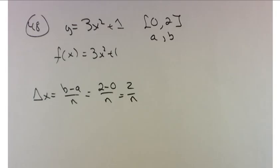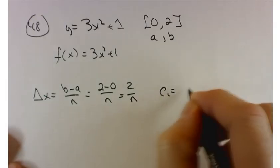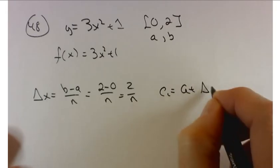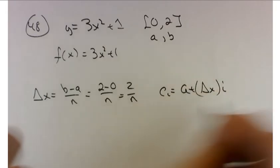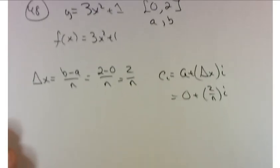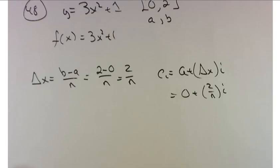The next thing I'm going to calculate is the point at which I'm going to find the height of my rectangles. That's going to be c sub i equals a plus delta x times i. 0 plus 2 over n times i. That's just 2i over n.